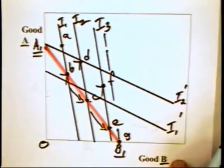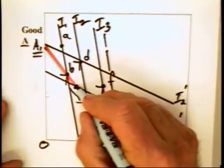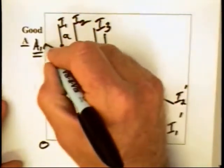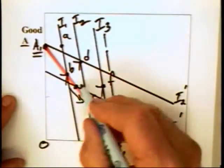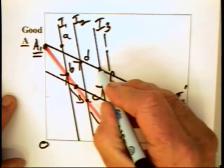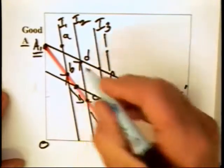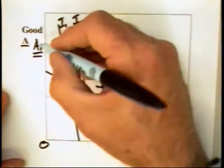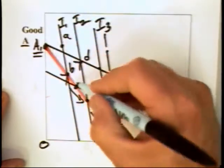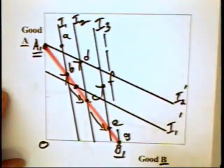Why? Because there's a point here that's preferred to this point, and this is equal value, so this point, A1, has got to be greater than this one. In the previous graphical analysis,